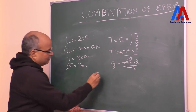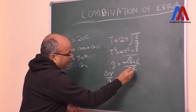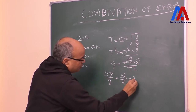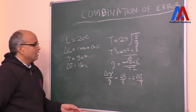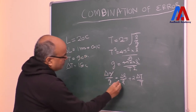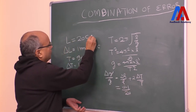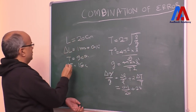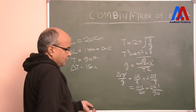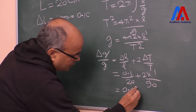Now when we find the error in G, using our previous formula: delta G upon G will be equal to — since L has power 1, we get delta L upon L, and we add 2 times delta T upon T. Now substituting the values: delta L is 0.1, L is 20, plus 2 times delta T which is 1, divided by T which is 90. When we solve this, we get 0.032.